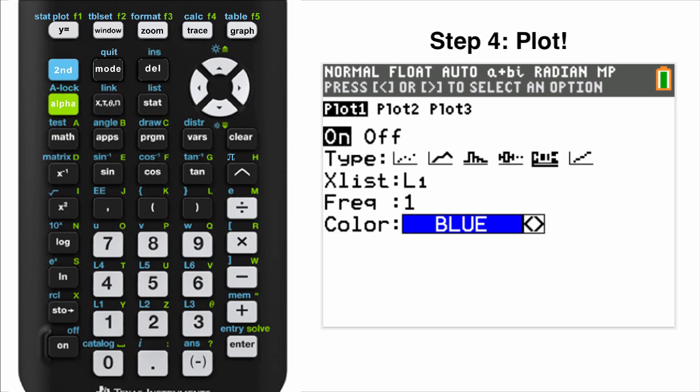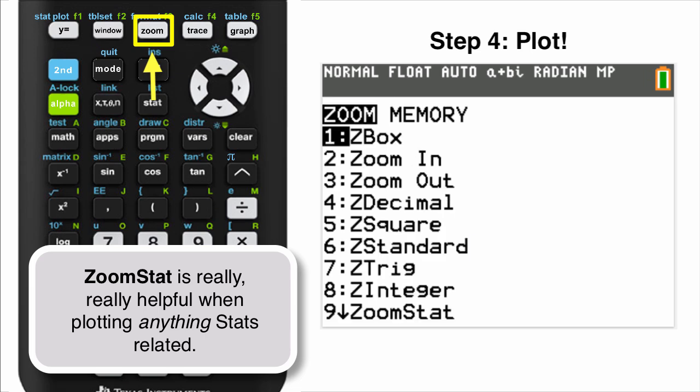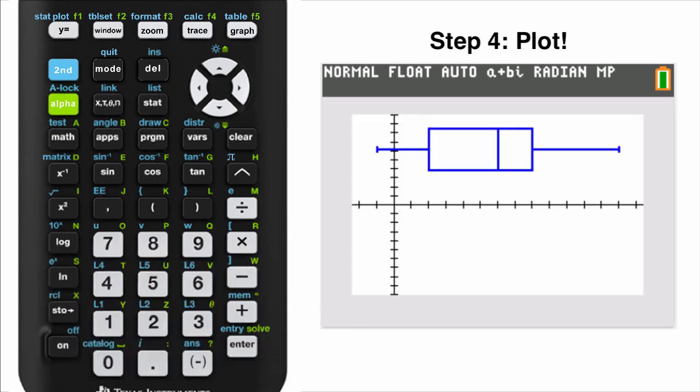Step 4: Plot. Best way to get a good looking plot is to press the key Zoom and choose number 9, ZoomStat. That's it.